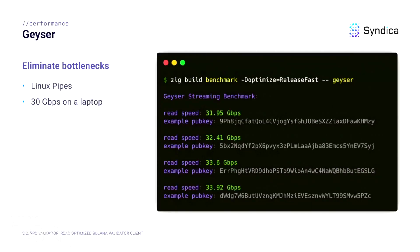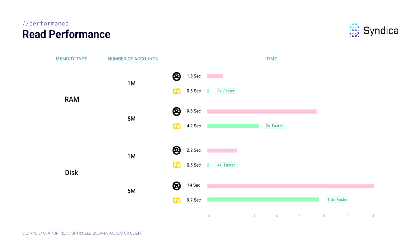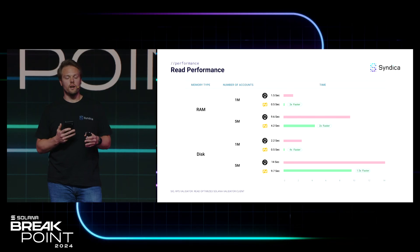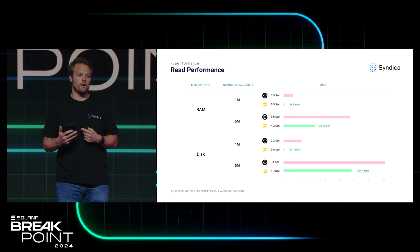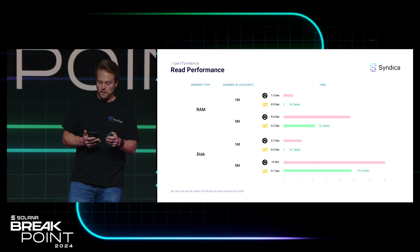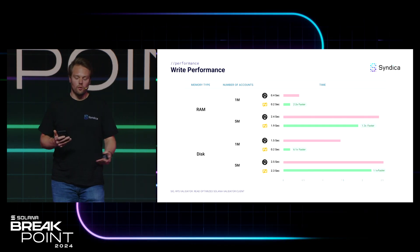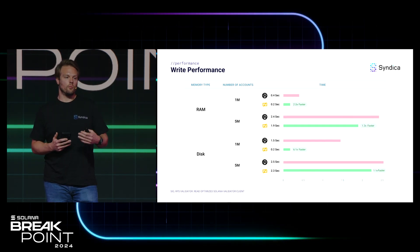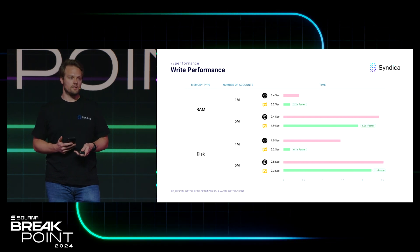In addition, to eliminate bottlenecks in the validator, we've also implemented a Geyser interface with Linux pipes that exceeds 38 gigabits per second, just running on consumer hardware. Our optimizations have paid off. For read performance — our main focus — the account index is performing between 1.5x to as much as 4x faster for read operations compared to Agave. We also care about writes, and there we're seeing performance from 1.1x to 6x faster than Agave.